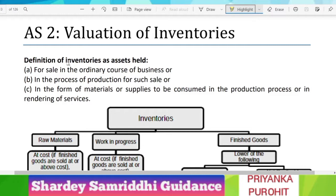I am also a CA Final student preparing for May 21 exams like you all. As you know, ICAI has announced the dates — it is 5th of July. The proper schedule will be announced soon, so we have to back up and prepare for it in the best possible manner. Today we are going to start with Accounting Standard 2: Valuation of Inventories. In this video, we will cover the concepts as well as questions from PM as well as SM. So let's start.